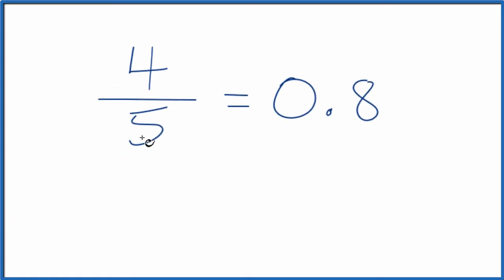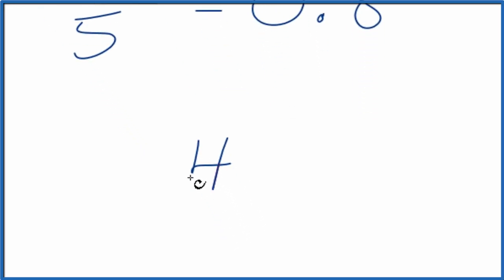We could also divide this longhand. So think of it as four divided by five. We want to know the decimal form for four divided by five. If we do it longhand, we've got four, and we want to know how many times five goes into four.